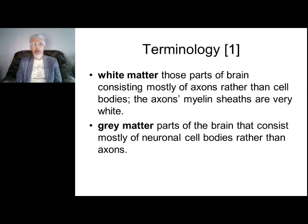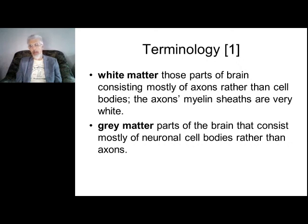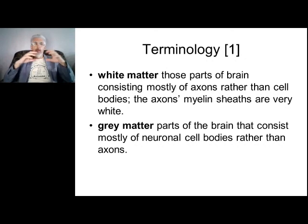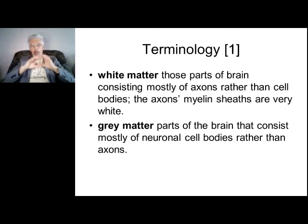Next important terms: white matter and gray matter. White matter is the part of the brain consisting of axons covered with myelin — it is like cables. If neurons are switches, then white matter is the cables. A lot of white matter means many cables; a lot of neurons' bodies means gray matter.